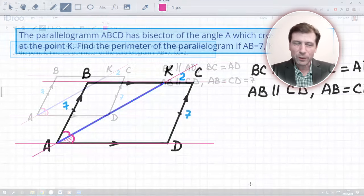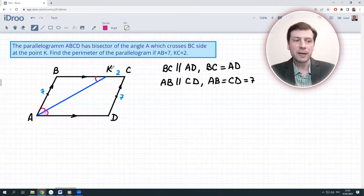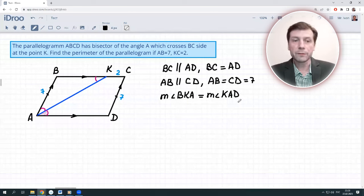But if we do that, we automatically start thinking about alternate interior angles. So angles BKA and KAD are alternate interior angles, which means they are congruent. The measure of angle BKA is the same as the measure of angle KAD. That's great. But if so...